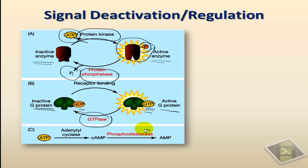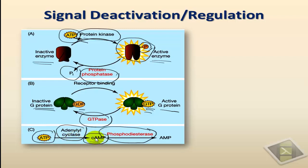A third way is by the use of phosphodiesterases. Cyclic AMP, the second messenger, is produced from ATP by the effector enzyme adenylyl cyclase. Cyclic AMP is usually very rapidly deactivated by phosphodiesterase, which converts cyclic AMP into AMP, the inactive form.